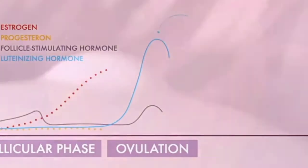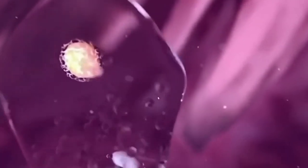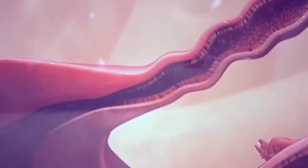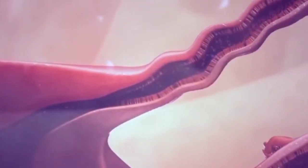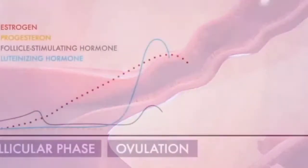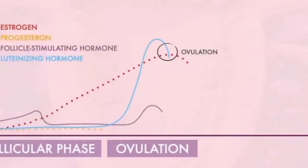The egg enters the fallopian tube and begins its journey toward the uterus. Ovulation usually occurs 16 to 32 hours after the surge begins, around day 14 of your menstrual cycle.